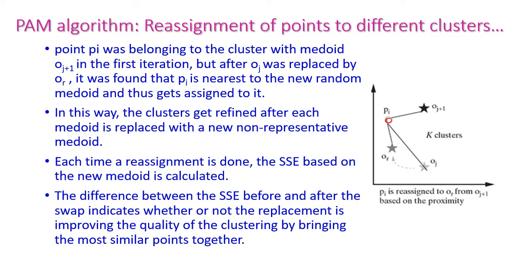Consider a new point PI belonging to a cluster with medoid OJ+1 in the first iteration. After OJ is replaced by OR, OR becomes the new medoid. If PI is found to be nearest to the new medoid OR rather than OJ, then PI gets reassigned to OR's cluster. This distance to the old medoid is greater, while the distance to the new medoid is less, so PI is reassigned. In this way, clusters are refined after each medoid is replaced with a new non-representative medoid.